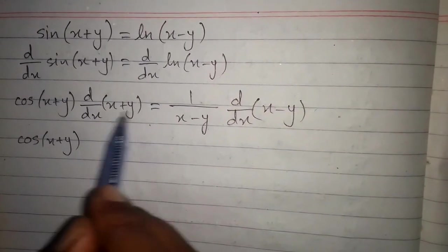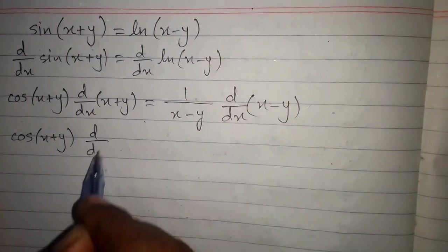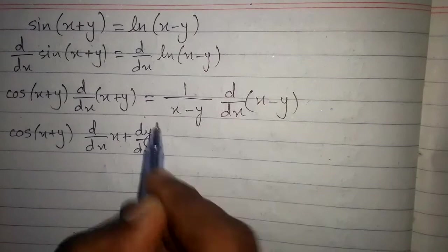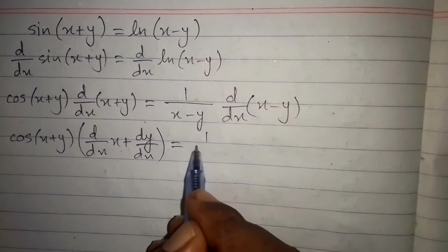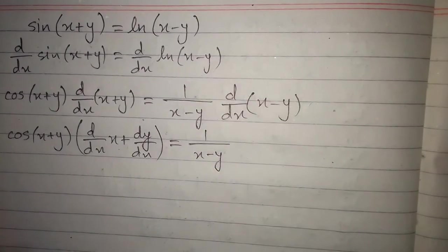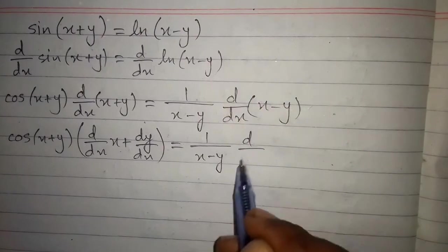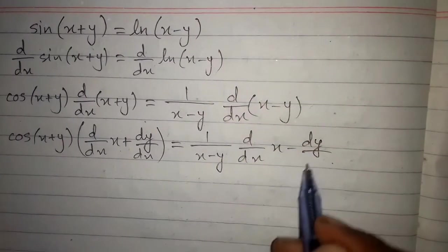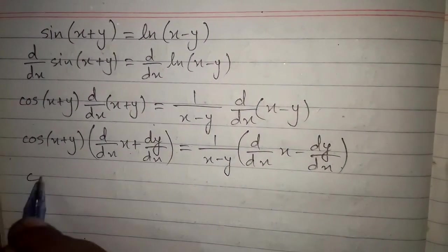Now we apply the derivative to both terms: cos of x plus y times d/dx of x plus dy/dx, and then 1 upon x minus y multiplied by d/dx of x minus dy/dx.